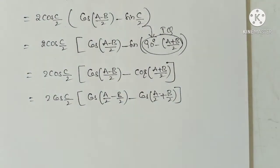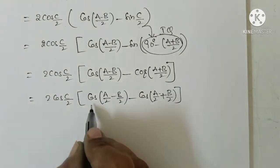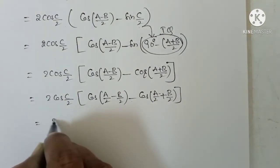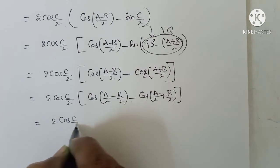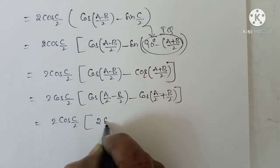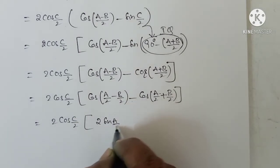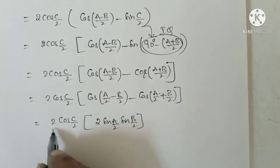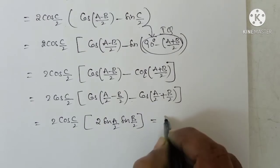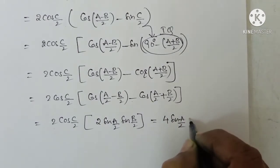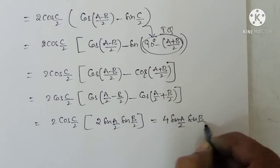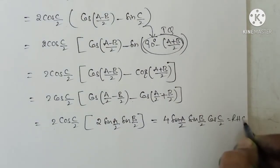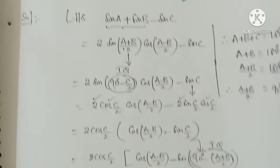Taking 2 cos(C/2) as common, and noting that C/2 equals 90 minus (A+B)/2, we apply the formula: cos A minus B minus cos A plus B gives 2 sin A sin B. So A plays A/2 and B plays B/2. Multiplying the 2 outside, 2 into 2 equals 4. So we get 4 sin(A/2) sin(B/2) cos(C/2). This is our RHS.